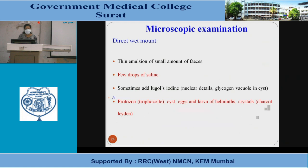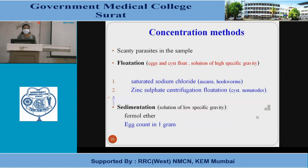For microscopic examination, a direct wet mount is prepared: a thin emulsion of a small amount of faeces is taken with a few drops of saline. Lugol's iodine can be added for iodine preparations, in which nuclear details like glycogen vacuoles in cysts are seen. Trophozoites, cysts, eggs and larvae of helminths, and Charcot-Leyden crystals can all be seen.